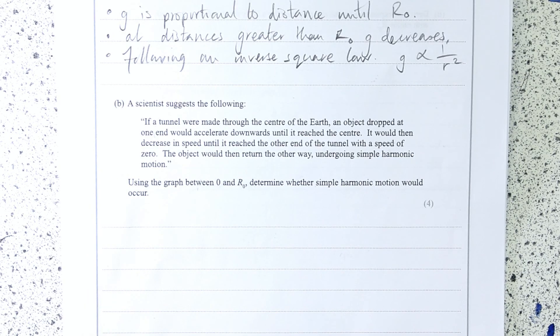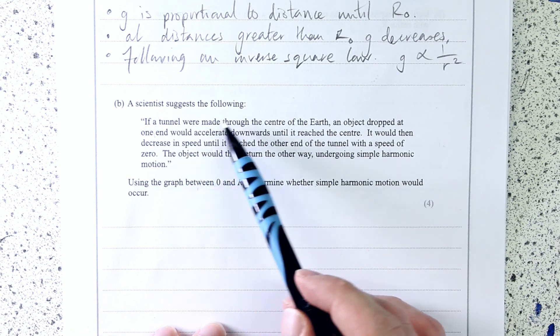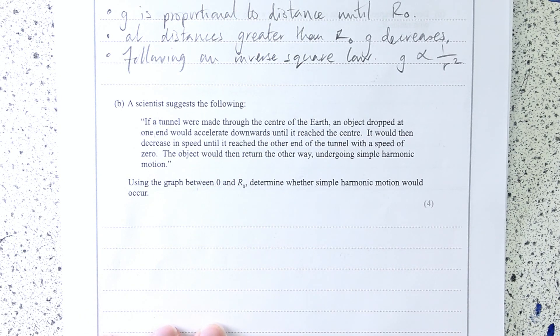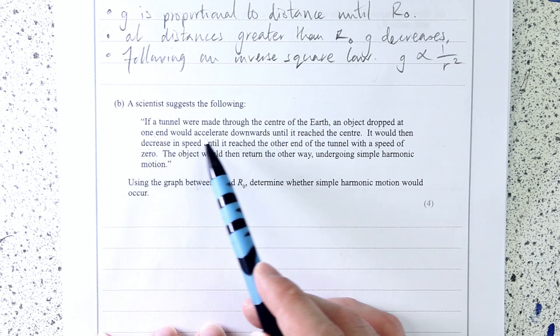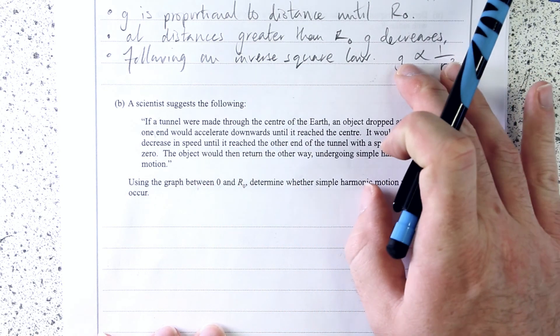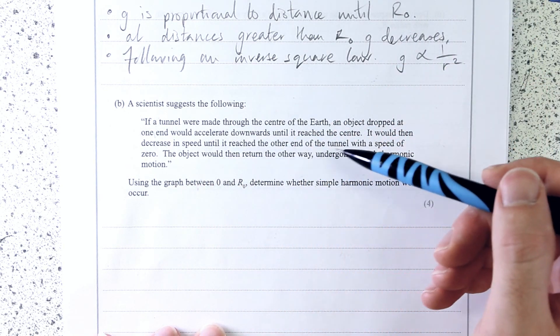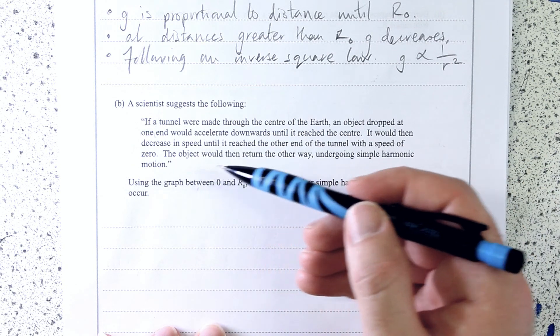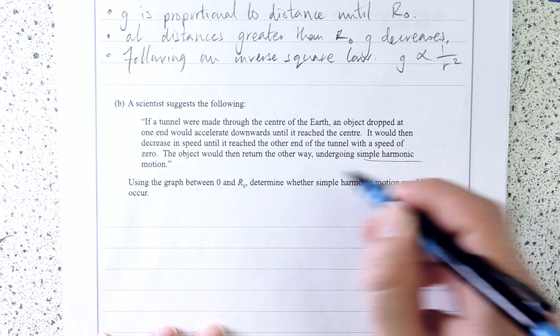So I actually find this completely fascinating myself. A scientist suggests the following, and I remember this from a textbook, that's why I'm finding it quite easy, but I'm going to show you how you can work out how easy this question is. If a tunnel made for the center of the Earth, an object dropped from one end would accelerate downward until it reached the center. It would then decrease in speed until it reached the other end with a speed of zero. The object would then return the other way, undergoing simple harmonic motion.